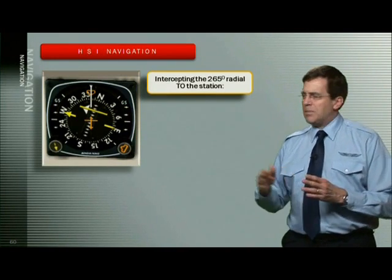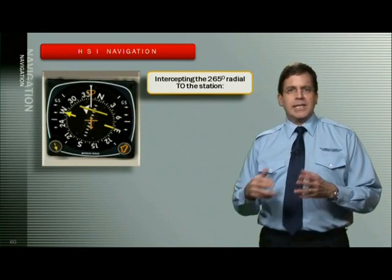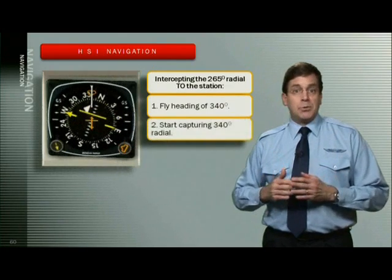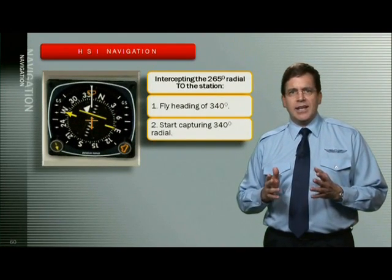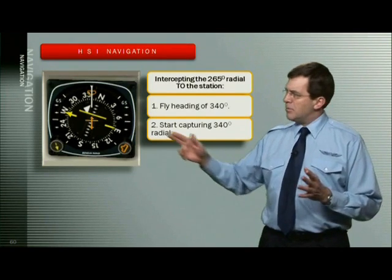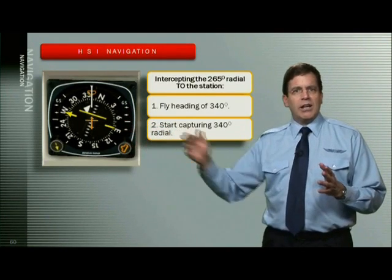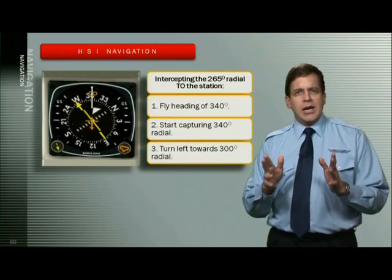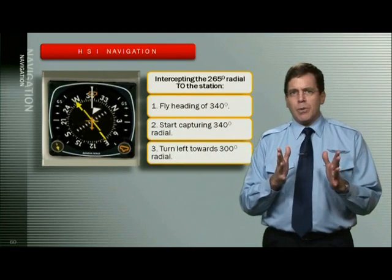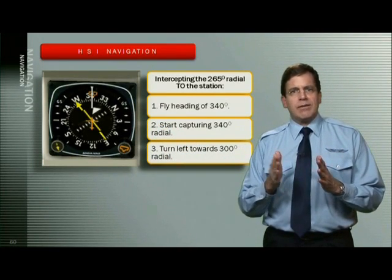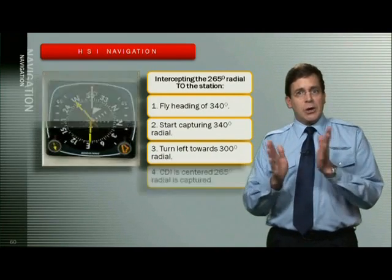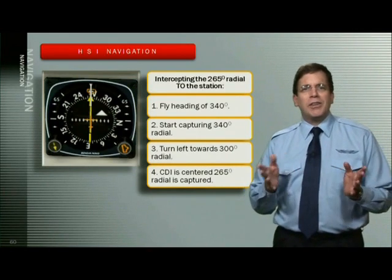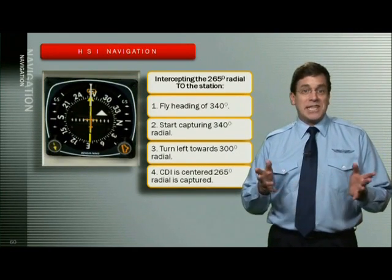Usually you want to make this intercept angle at about 30 to 40 degrees — in this case, 340 degrees. As the aircraft begins capturing the 340 degree radial centerline, the deflected CDI begins to move towards the center, aligning with the head and tail of the needle. As this movement occurs, begin turning the aircraft towards the centerline at a turn rate matching the needle's rate of movement, so that the aircraft and the needle agree with each other on the 265 degree radial. It's a very satisfying feeling to roll out on the course centerline at the same time the CDI needle centers.